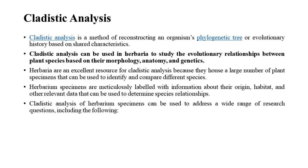Cladistic analysis is a method of reconstructing an organism's phylogenetic tree or evolutionary history based on shared characteristics. It can be used in herbaria to study the evolutionary relationships between plant species based on their morphology, anatomy, and genetics. Herbaria are an excellent resource for cladistic analysis because they house a large number of plant specimens that can be used to identify and compare different species, with specimens meticulously labeled with information about their origin, habitat, and other relevant data.